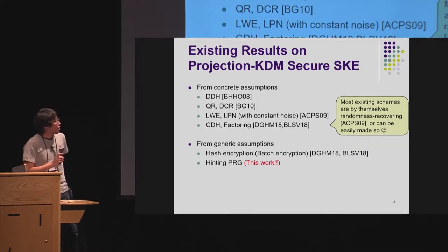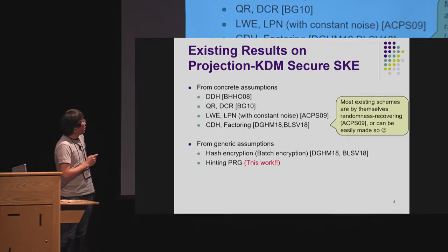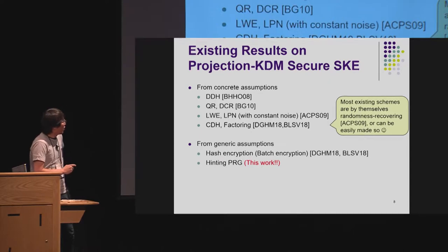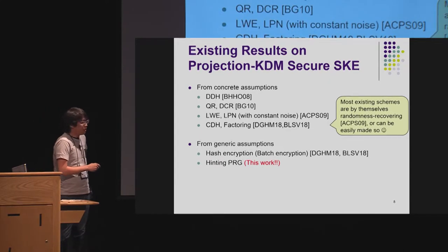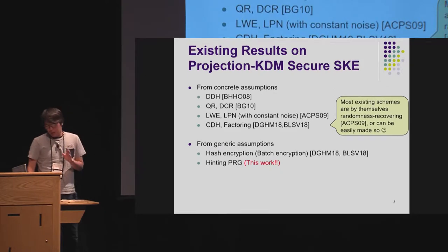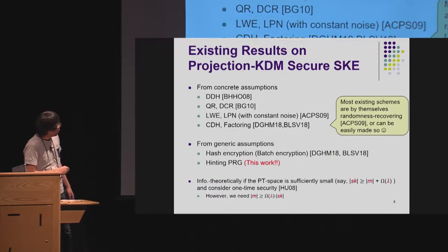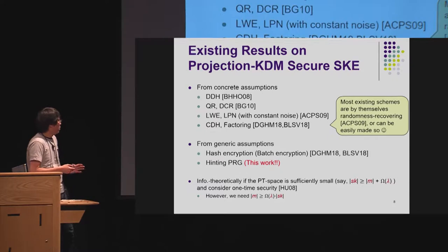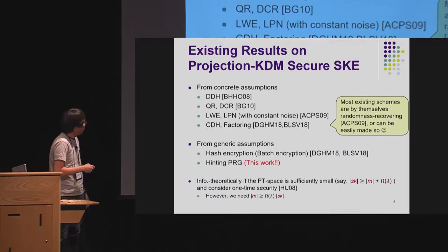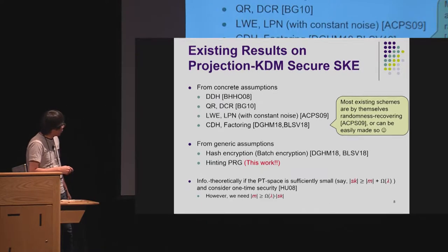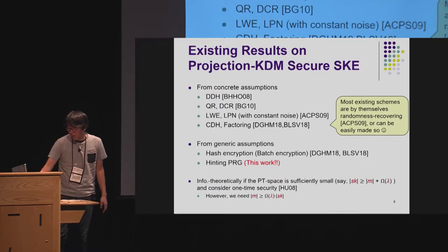What is nice about this primitive is that most existing schemes are by themselves already randomness-recovering, or can be made so easily. So requiring randomness-recovering property for this primitive is not a strong assumption. Finally, if we only require the message space to be very small, this security can be achieved information-theoretically. But we require somewhat long plaintexts for this work.